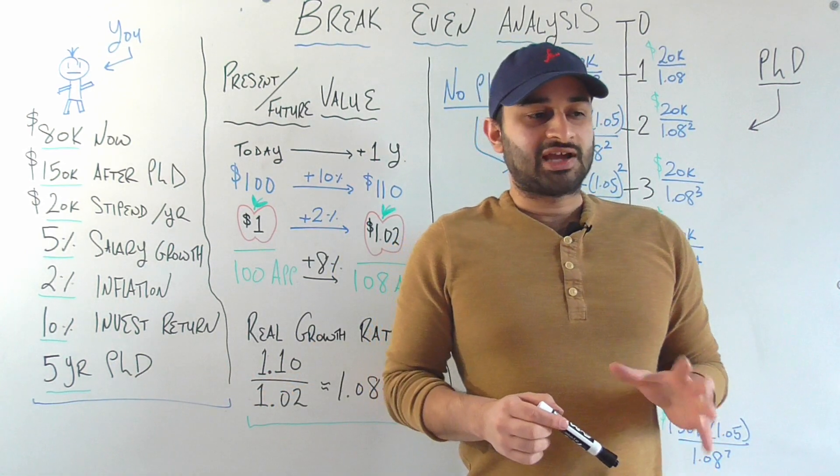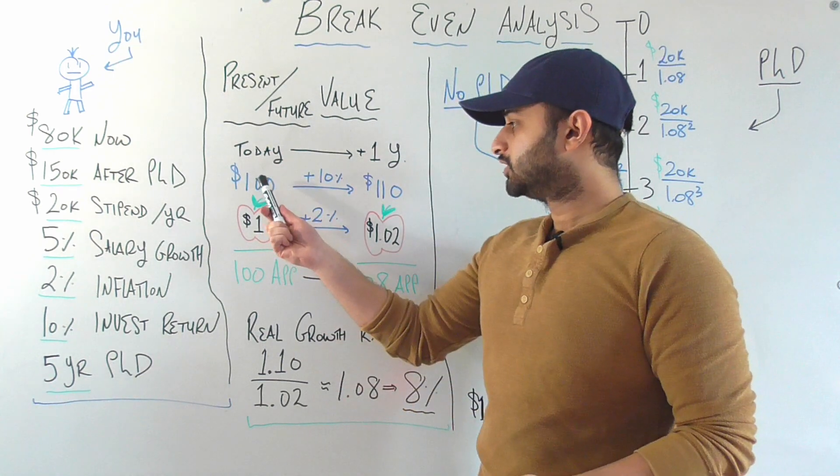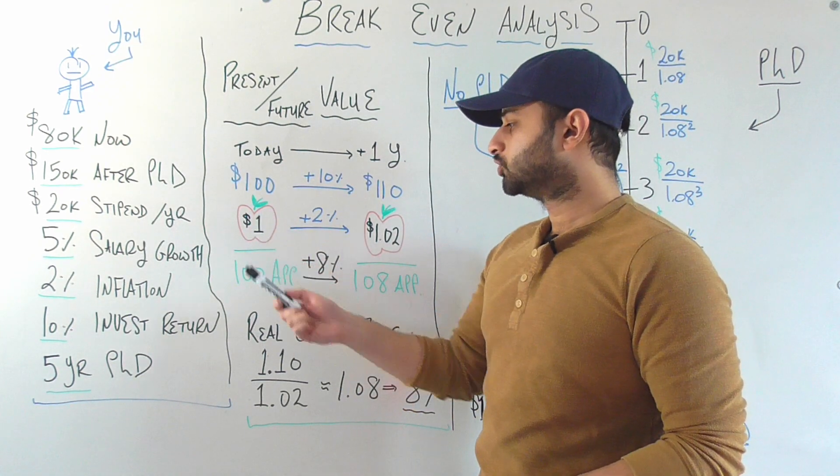Now the question that I have for you is how many apples can you buy today? Pretty easy. You have $100 today. Apples cost $1, so you can buy 100 apples.